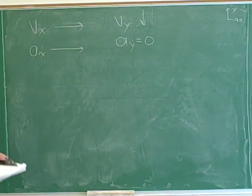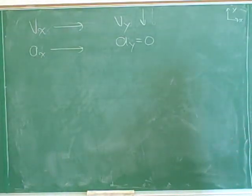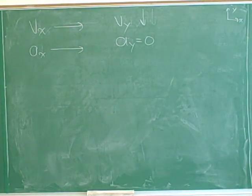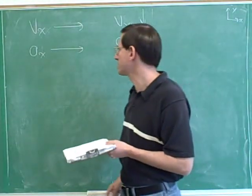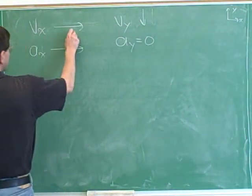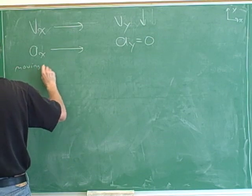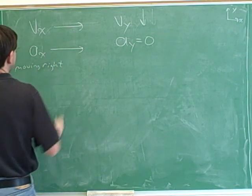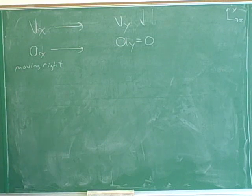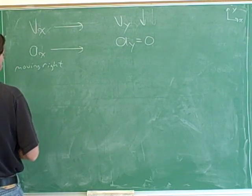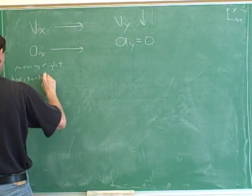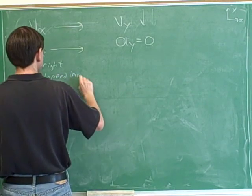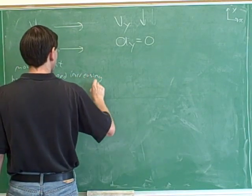Try to write down everything you can about this object. We're going to think about the two components separately — the key word is separately. Horizontally, we're moving to the right. And since our horizontal acceleration is parallel to our horizontal velocity, we're speeding up horizontally. Our horizontal speed is increasing.